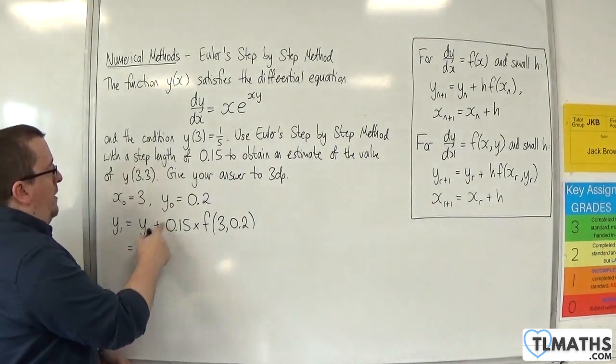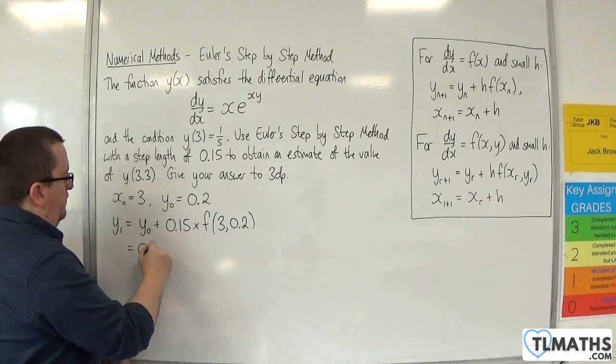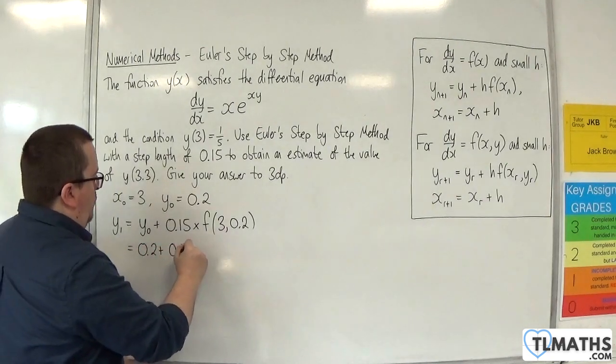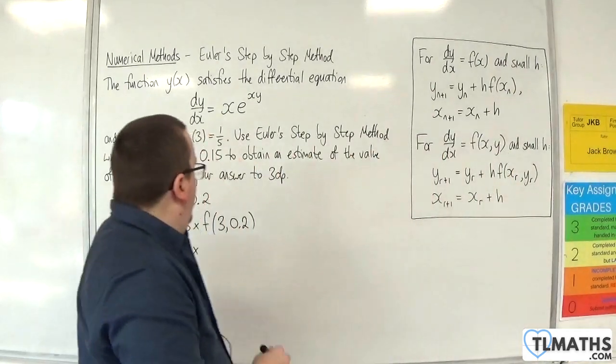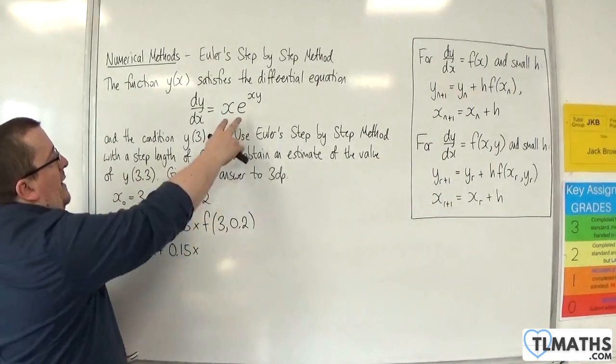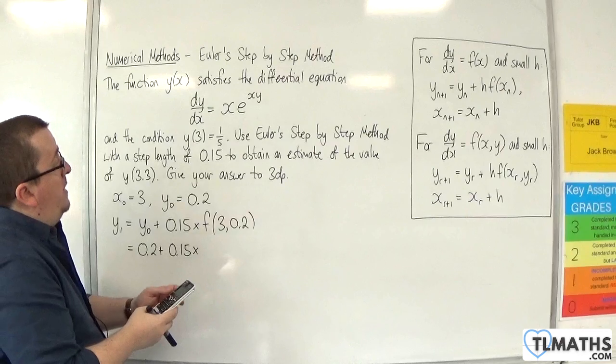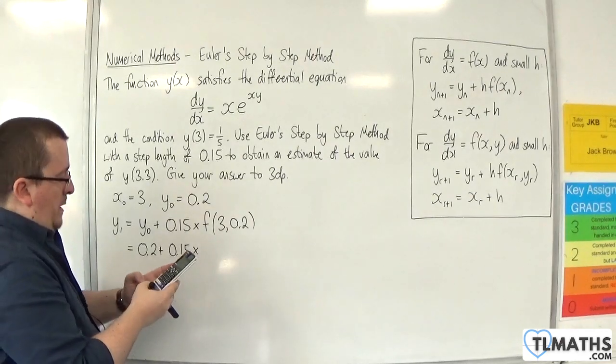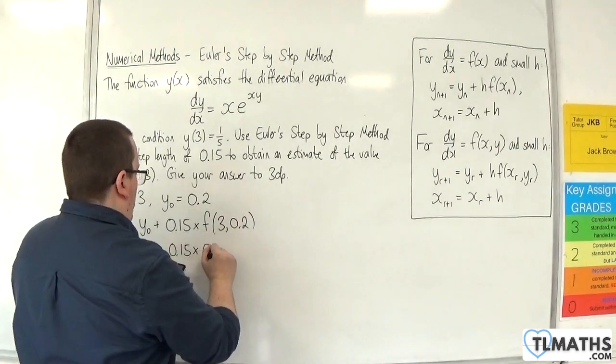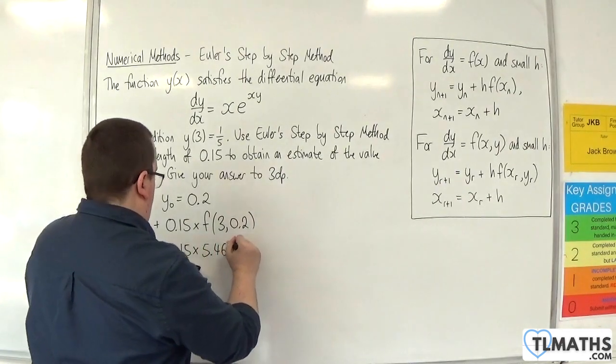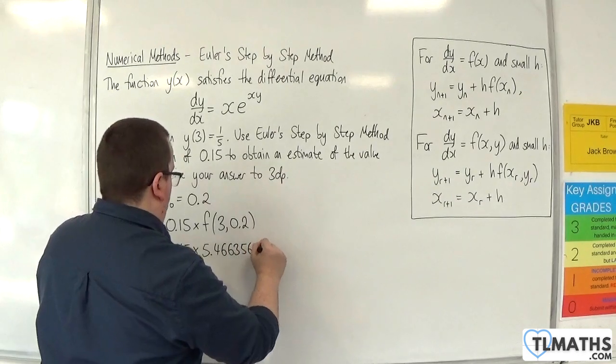Now y₀ is 0.2, plus 0.15, times by, I need to substitute x is 3, y is 0.2 into this. So 3 times e to the power of 3 times 0.2. And we get 5.466356401.